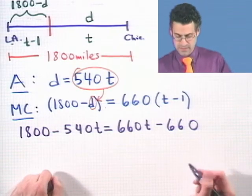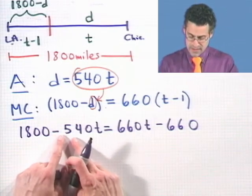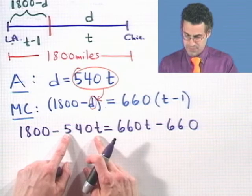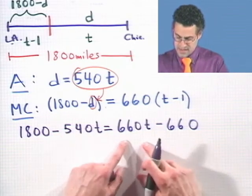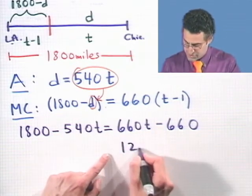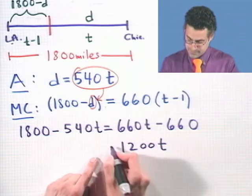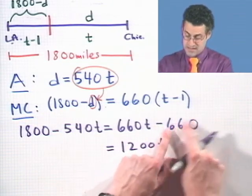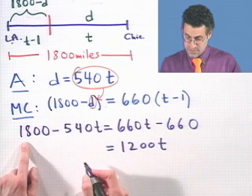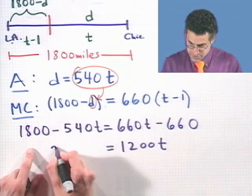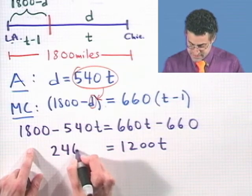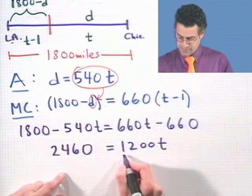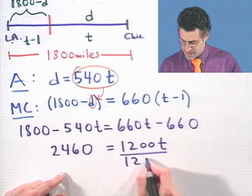Now, I can actually combine terms here a little bit. I can add the 540 T to both sides. And when I bring that to this side, I'm going to see here 1,200 T. And if I add 660 to both sides, it'll drop out of here. And when I add it to this side, I'm going to see 2,460. And now I can solve for T by dividing both sides by 1,200.